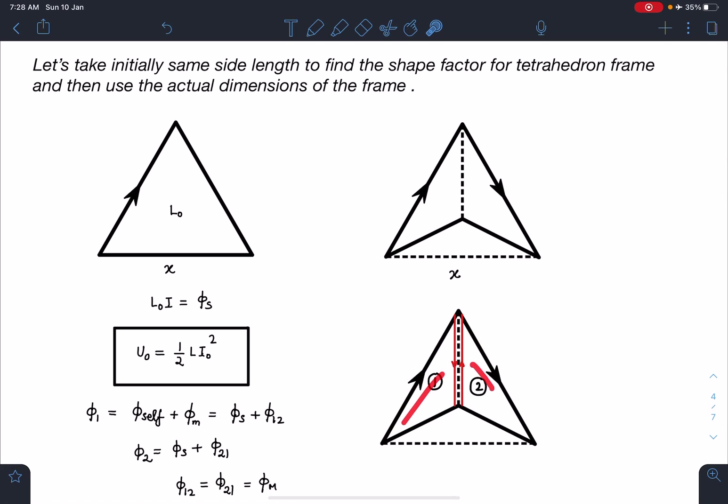When I am considering these two as individual loops there is going to be mutual flux or mutual inductance will come into picture. When I write flux passing through the first one then it is going to be flux due to its own current and then flux passing through one due to two. I am writing this as φ_self + φ₁₂, flux passing through one due to two.